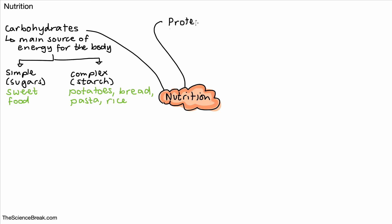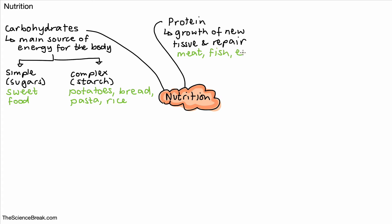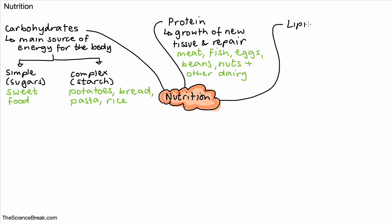The next nutrient we want to look at is protein. Protein is really important in the body and its role is for growth of new tissue — for growth in general, because we make new cells and tissue using protein. But also if we hurt ourselves, we need to repair damaged tissue. So proteins provide nutrients for growth and repair. We can find proteins in meats, fish, eggs, beans, nuts, and some dairy, mainly milk.